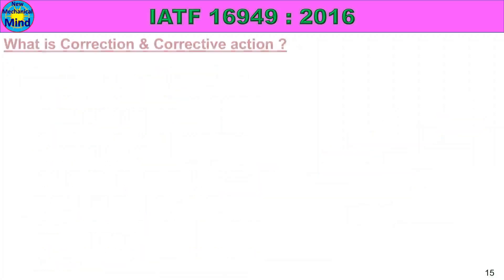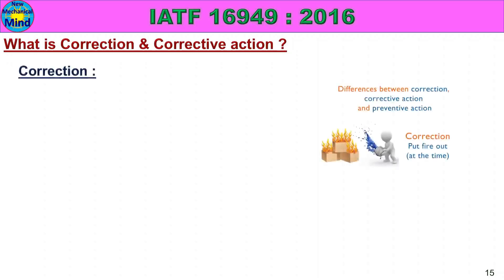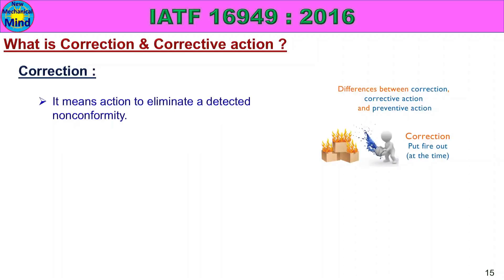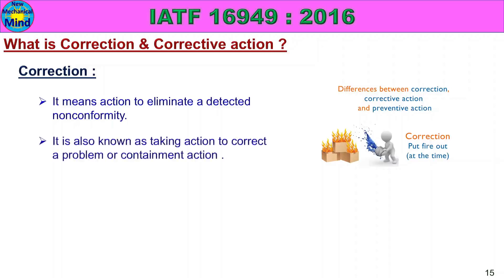What is Correction and Corrective Action? First, Correction — it means action to eliminate a detected non-conformity. It is also known as taking action to correct a problem, or Containment Action.